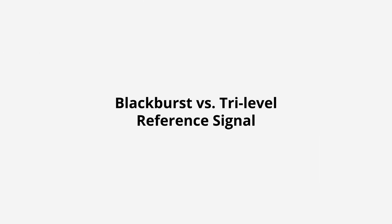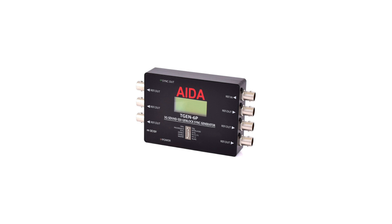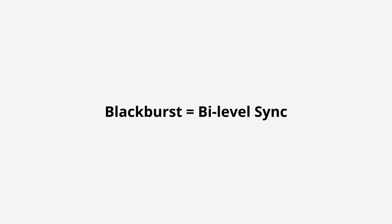Blackburst versus tri-level reference signals. With genlock, there is usually a device chosen as the timing reference called a sync generator. All other audio and video devices are connected to this device and synchronized to its internal clock. Blackburst, or bi-level sync, is an analog signal commonly used as a reference to synchronize standard video. This blank reference signal allows other devices within the broadcasting system to get on the same timing plane. While blackburst is slowly being replaced by tri-level signals, it's still often used as a fallback for legacy equipment that only supports composite signals.